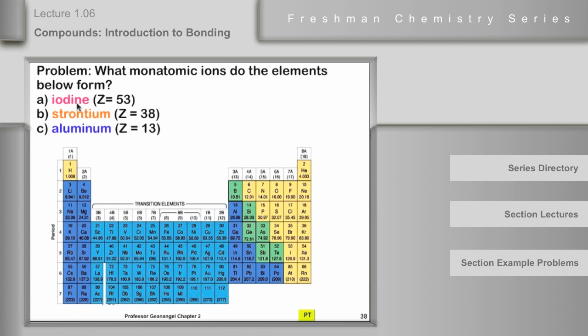So iodine, Z is equal to 53, we'll trace it down here and there it is right there. Z is equal to 53, iodine, it's in group 7A and therefore we would expect it to gain one electron to get to the xenon number here, 53 going to 54. So we would predict that iodine formed I with one minus, which can be written either I as a single minus or I one minus, both of those are workable.